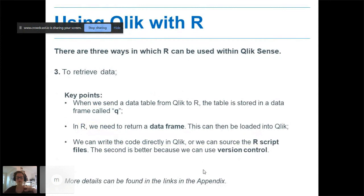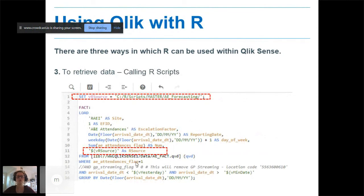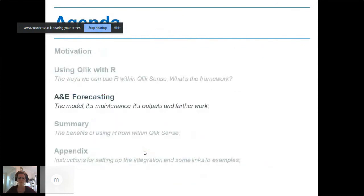Key points: when we send the data table from Qlik to R, it's always stored in R data frame called Q. In R we then need to return back a data frame which can then be loaded into Qlik. And we can write the code directly in Qlik or we can source an R script file. I'd say the second's better because then you can set up all your version control behind it. If you want to retrieve R scripts, I've defined a variable here called VR_source which is the location of all my R scripts. And then when I'm loading in my fact table, my historical A&E attendances, I include this variable VR_source to be a column in that data table such that it's getting sent to R along with the historical data. That's it. Those are the three key ways you can use Qlik with R. That last way for data retrieval is how we implemented this A&E forecasting model.